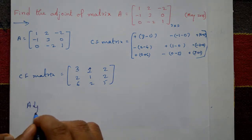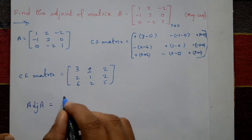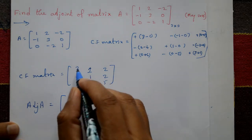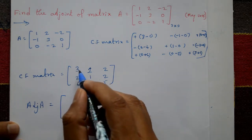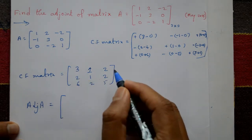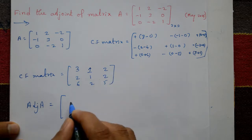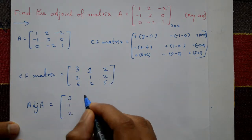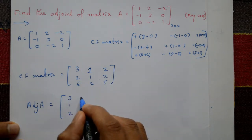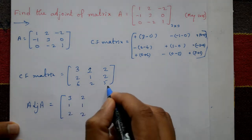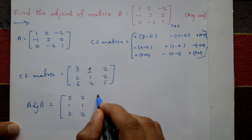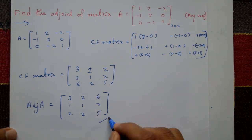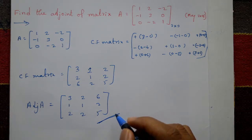Adjoint of A is very simple — you change row into column or column into row. First row becomes first column: 3, 1, 2. Second row becomes second column: 2, 1, 2. Third row becomes third column: 6, 2, 5. This is the required adjoint of matrix.